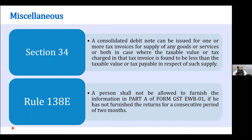Rule 138E was introduced, which resulted in a situation where the e-way bill facility can be blocked by the department if you don't file your return — and you cannot file a return unless you pay the entire tax. For example, if you have a 100 rupees tax liability with 95 rupees of credit and only 5 rupees in cash payment needed, but you don't have that 5 rupees, you can't file the return at all. If returns aren't filed for two consecutive periods, your e-way bill is blocked — and without an e-way bill, you can't move goods or do business. This was argued to be against the provisions of Article 14. These are disappointing features that should not have been introduced in the first place or should have been rectified over time.